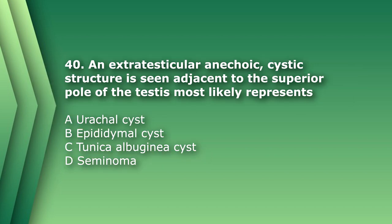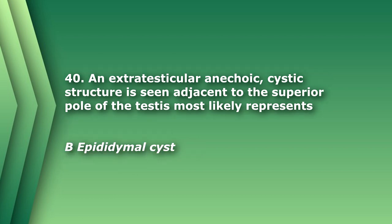Number 40. An extratesticular anechoic cystic structure is seen adjacent to the superior pole of the testis. Most likely represents: A. Urachal cyst. B. Epididymal cyst. C. Tunica albuginea cyst. D. Seminoma. A urachal cyst is usually seen on top of the bladder. A seminoma is a testicular tumor. A tunica albuginea cyst is usually within the margin or intratesticular. So the most likely answer is B, epididymal cyst.